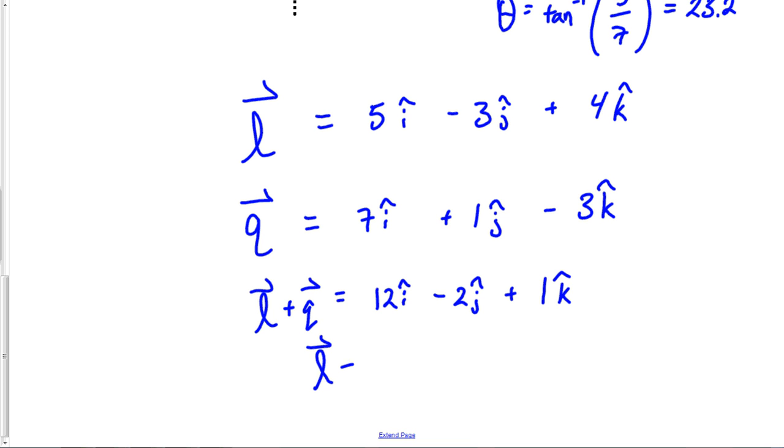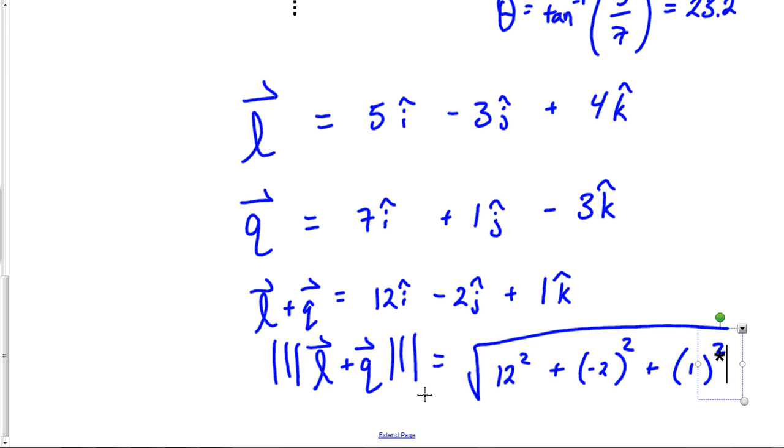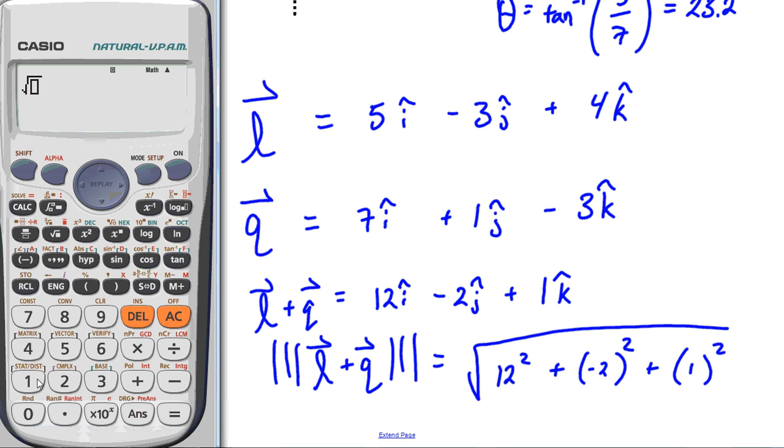What if you're asked to find the resultant or magnitude? You do 12 squared plus negative 2 squared plus 1 squared, then take the square root. The radical of 12 squared plus 2 squared plus 1 squared equals square root of 149, or 12.2 is the resultant magnitude. That gives you a quick rundown on ijk notation, and we'll see you later on the Turtleberg network.